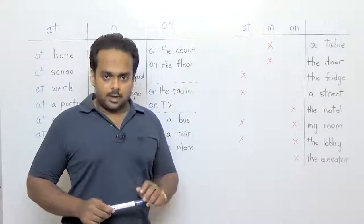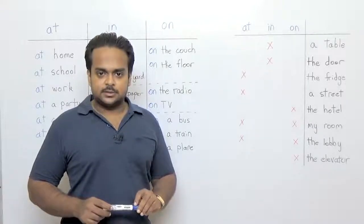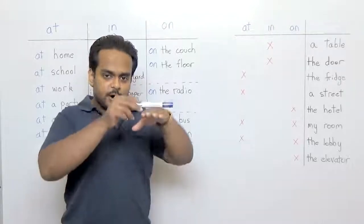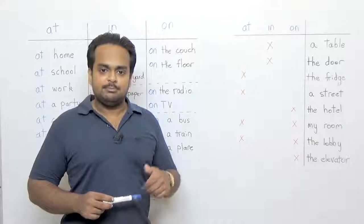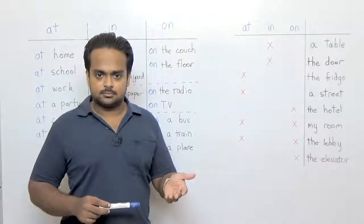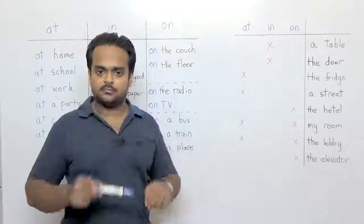The word on says that a thing is on top of something else. For example, there are three books on the table. So the books are on top of the table.